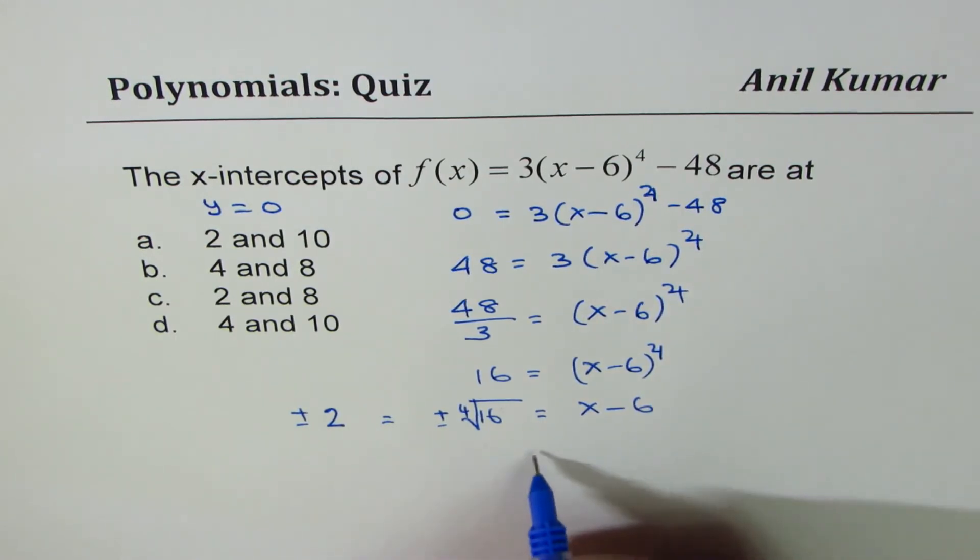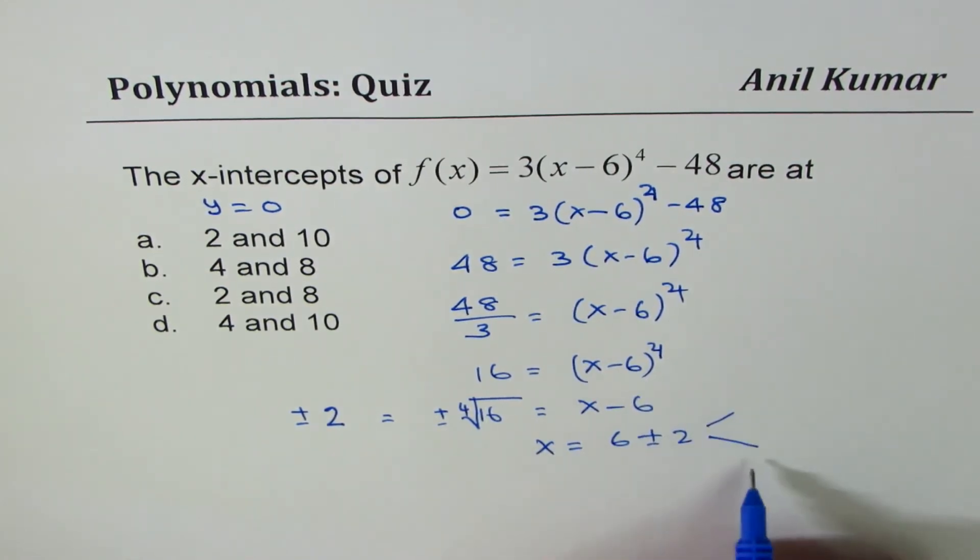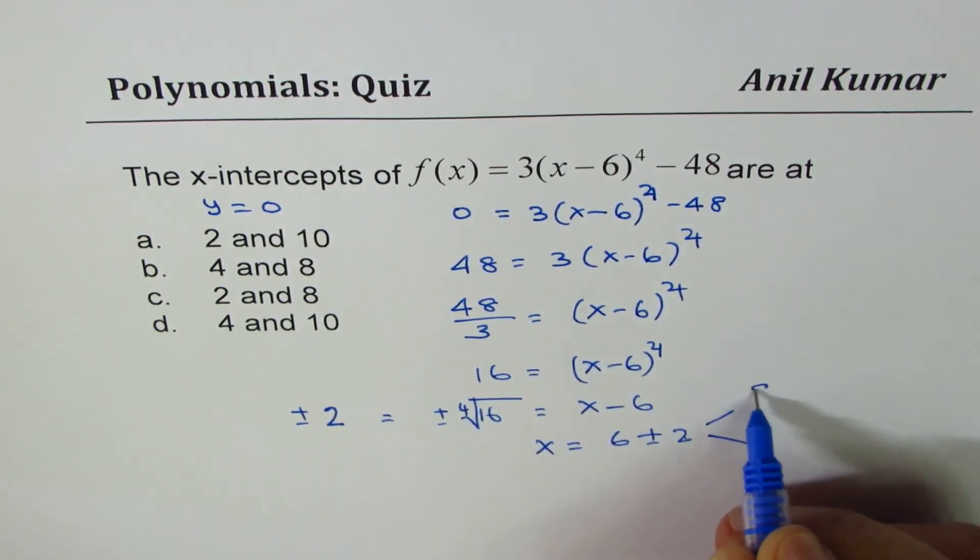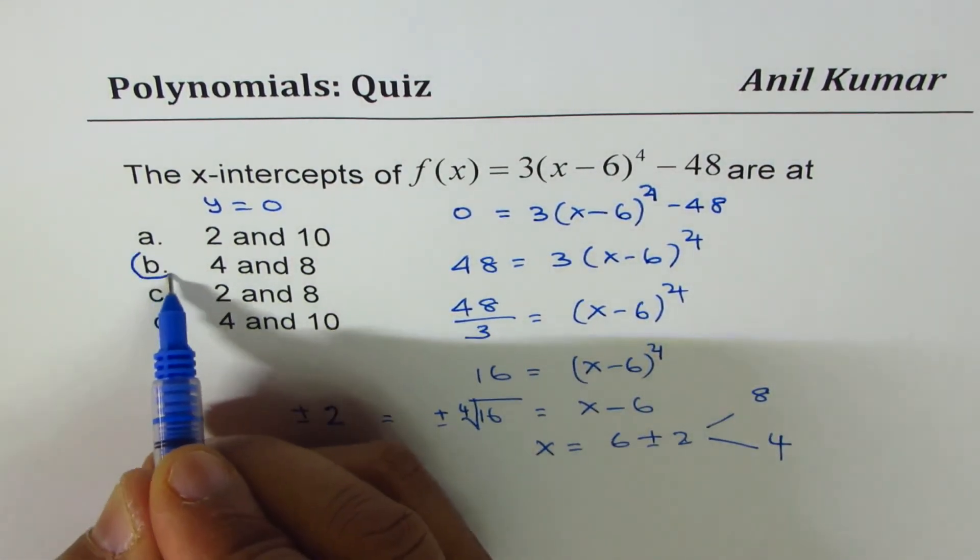Now bring 6 to the left side. So let me write here. x equals to 6 plus minus 2. And that gives us two answers. 6 plus 2 is 8. And 6 minus 2 is 4. So 8 and 4 is the right choice. Correct?